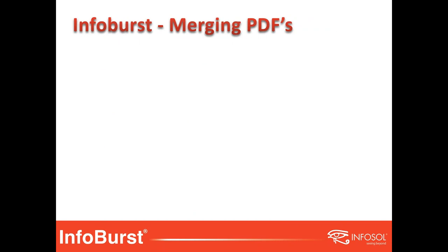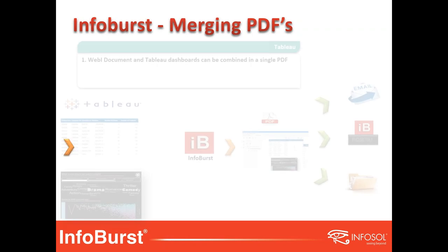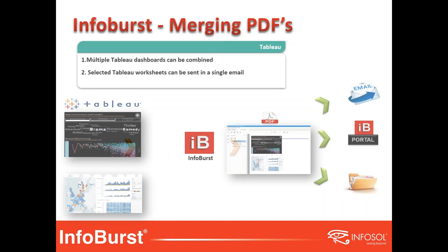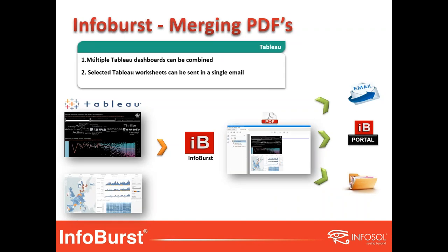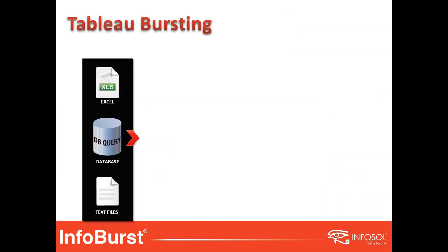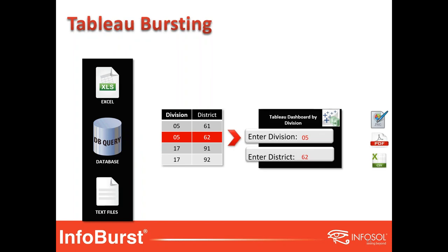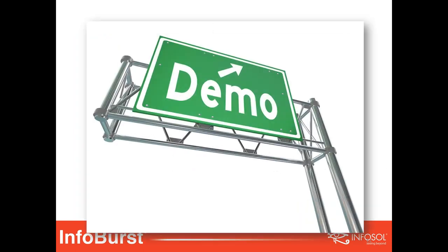Additional features native to InfoBurst can be extended to Tableau customers. You can have a Web Intelligence report and a Tableau dashboard with InfoBurst content grouping — merge different documents and publish to our portal, email it, or deliver to a network share. There was also a requirement to stitch multiple dashboard images into a single PDF and deliver via email — that's available with InfoBurst Tab. We also added the ability to burst Tableau documents similar to WebI documents using a filtering mechanism, delivering Tableau dashboards as PDF, PNG, or CSV.